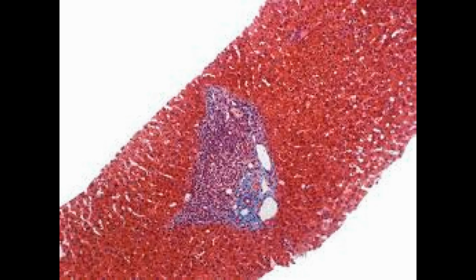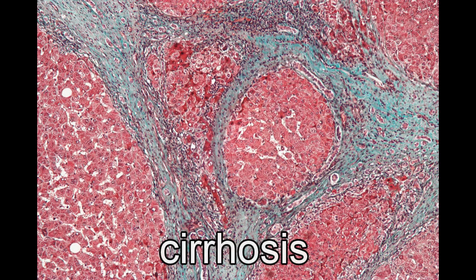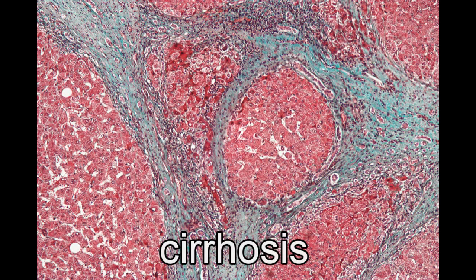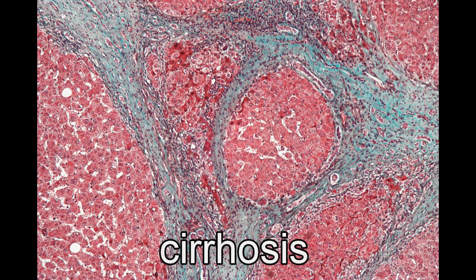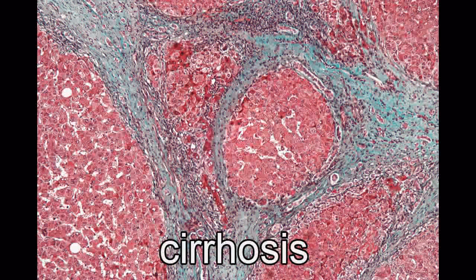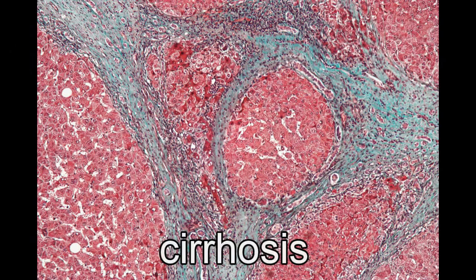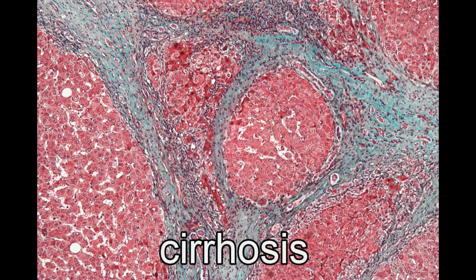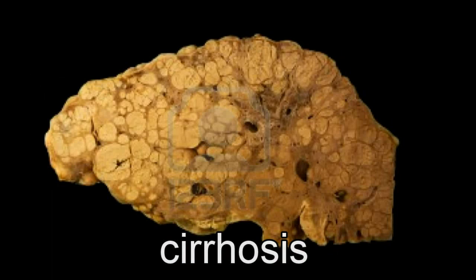Although most patients with fatty liver have little or no problem, up to 25% of patients may go on to develop chronic scarring of the liver as a result of chronic inflammation in the liver. This may lead to a complication known as cirrhosis, where most of the liver cells are replaced by scar tissue.